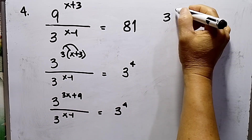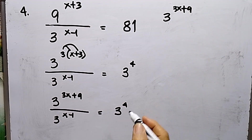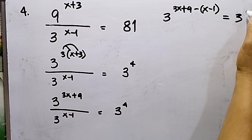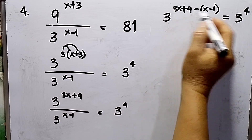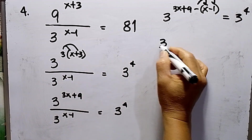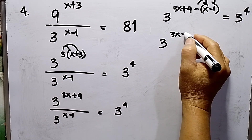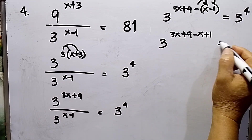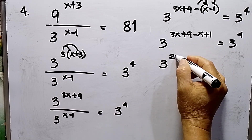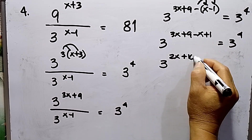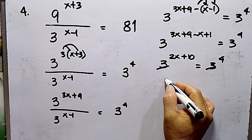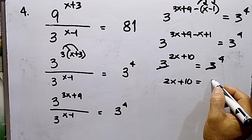This becomes 3 raised to the power of (3x plus 9 minus x minus 1) equals 3 raised to the 4th power. Distributing the negative sign inside the brackets: 3 raised to the power of (3x plus 9 minus x plus 1) equals 3 raised to the 4th power. Combining like terms: 3x minus x is 2x, and 9 plus 1 is 10. So we get 3 raised to the power of (2x plus 10) equals 3 raised to the 4th power. Since the bases are the same, they cross out.